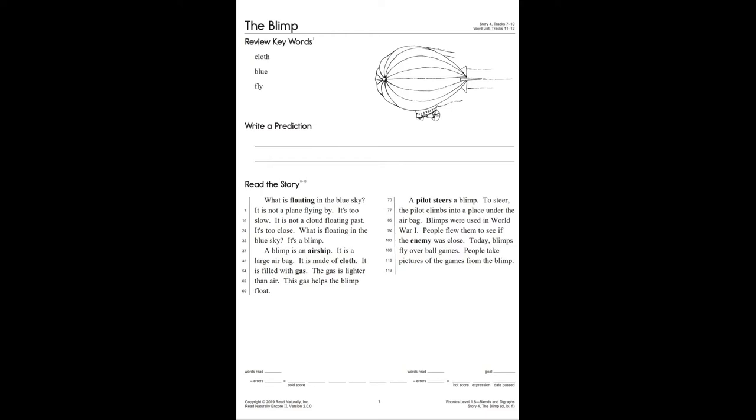A pilot steers a blimp. To steer, the pilot climbs into a place under the airbag. Blimps were used in World War I. People flew them to see if the enemy was close. Today, blimps fly over ballgames. People take pictures of the games from the blimp.